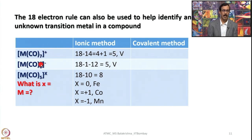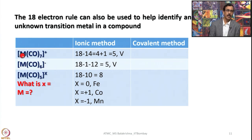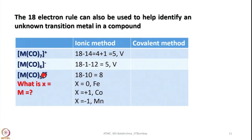For the anionic complex V(CO)6 minus: write 18 electrons, subtract 1 for the negative charge, subtract 12 from 6 CO ligands — you are left with 5 electrons, which is again vanadium. So vanadium carbonyl can form both V(CO)7+ and V(CO)6 minus: the cationic complex has one more electron while the anionic has one fewer — both obey the 18-electron rule.